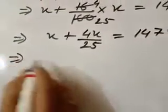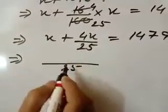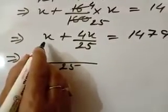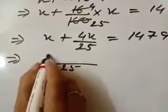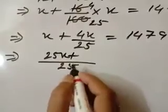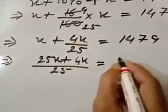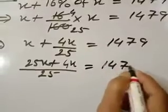Or, now LCM take 25. Here nothing is there, means 1. 25 divided 1, 25, 25 into X, 25X, 25 divided 25, 1, 1 into 4X, 4X is equal to 1479.